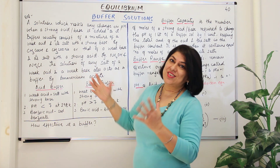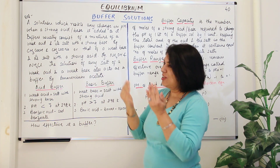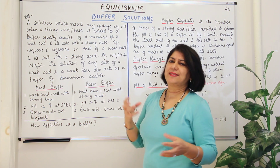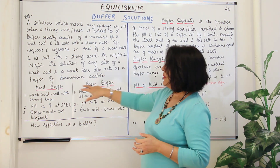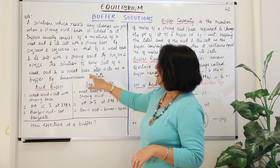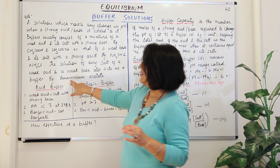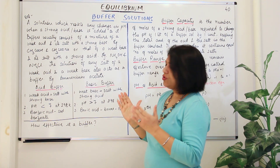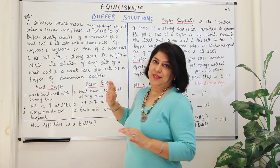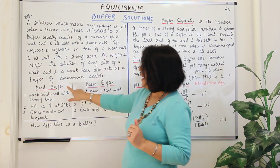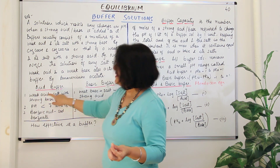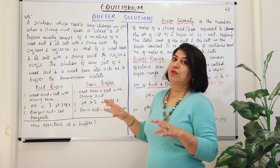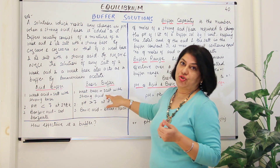Let us recap as I introduce buffers: a solution of any salt made by a weak acid and a weak base — for example ammonium acetate, formed from acetic acid and ammonium hydroxide — also acts as a buffer. So buffers are categorized as acidic buffer, basic buffer, and the third is a salt buffer. An acidic buffer is formed from a weak acid and its salt with a strong base; a basic buffer is formed from a weak base with its salt with a strong acid.